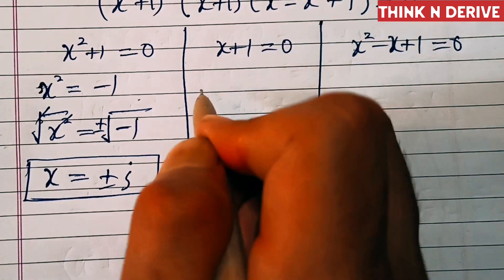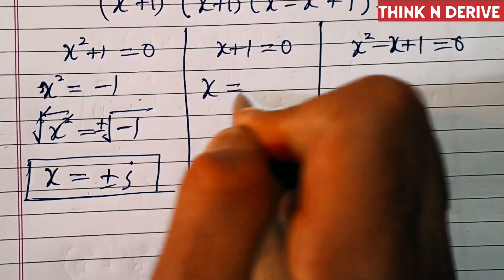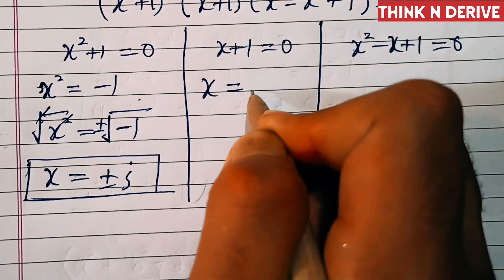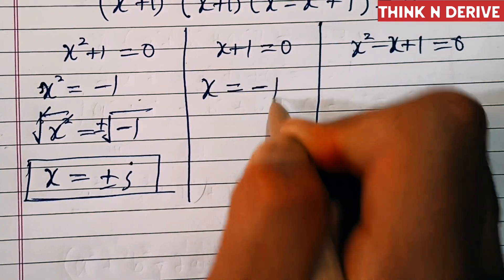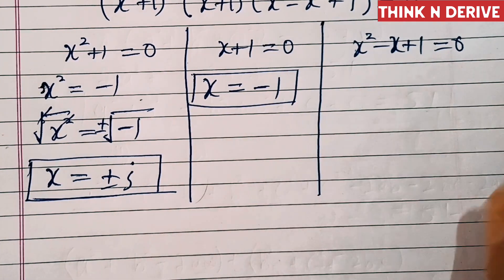From x + 1 = 0, we get x = -1. This is the third solution.